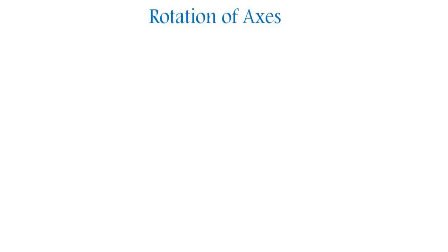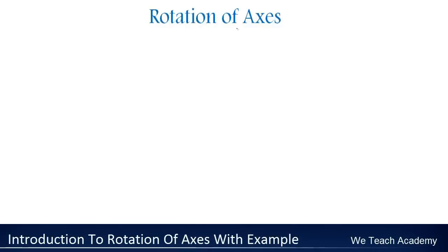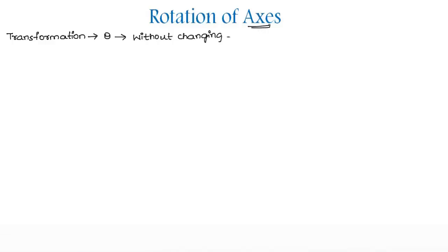Hello friends, this is Mayuri from VTG Academy and in this section we are going to discuss about rotation of axis. The transformation which is obtained by rotating both the coordinate axes in the plane by an equal angle, say theta, without changing the position of the origin is called rotation of axis.